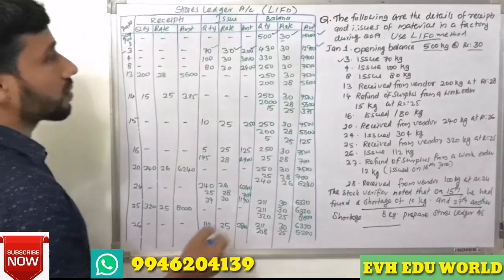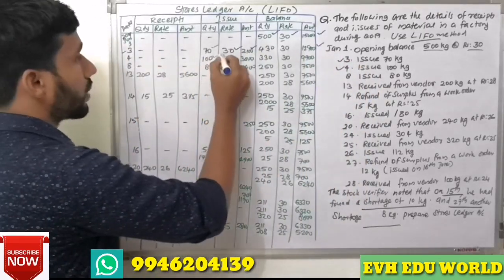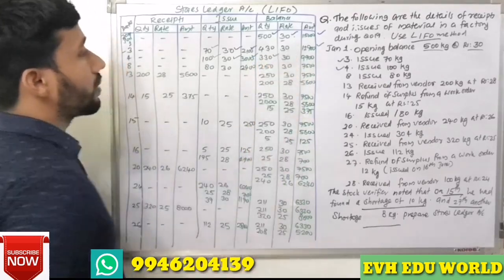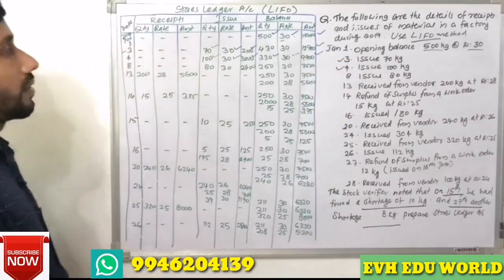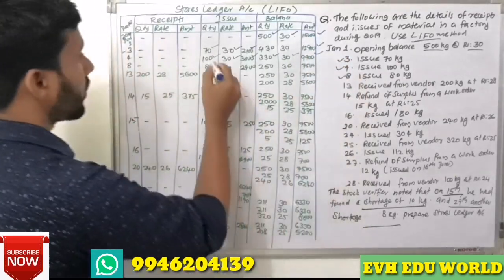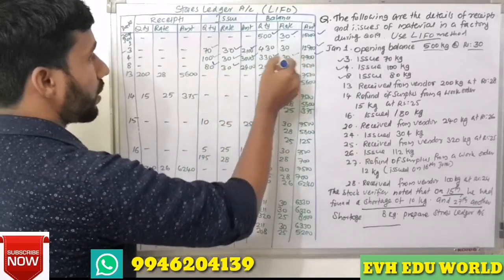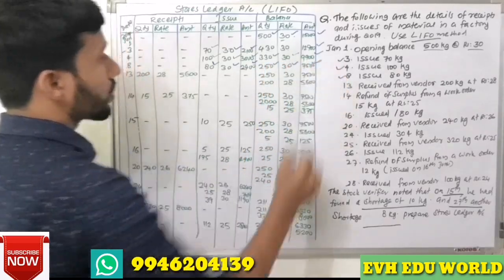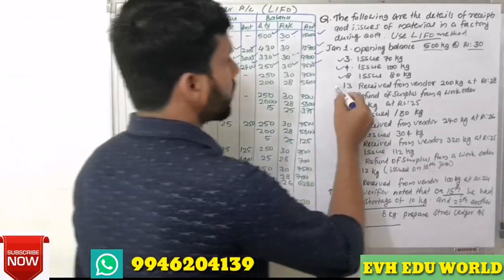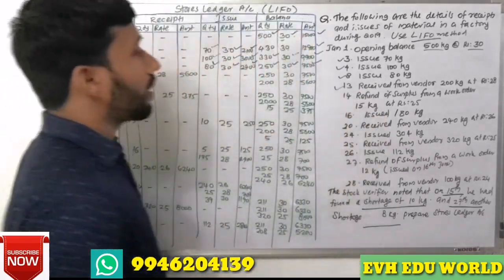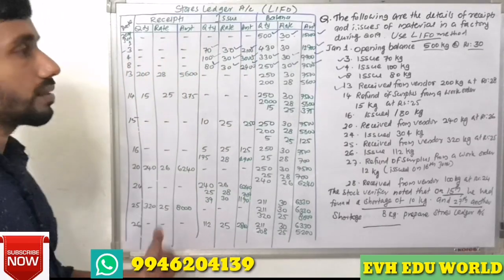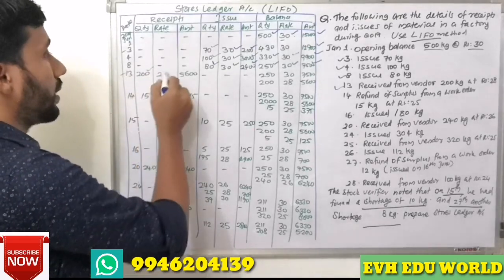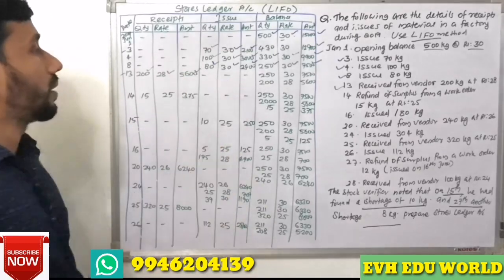Next, 4th issue: 100 kg at Rs.30, amounting to Rs.3,000. Balance: 330 kg at Rs.30. 8th issue: 80 kg at Rs.30. 13th: received from vendor 200 kg at Rs.28, totalling Rs.5,600. Balance now includes remaining opening stock plus new receipt.